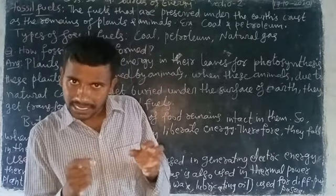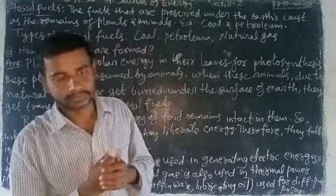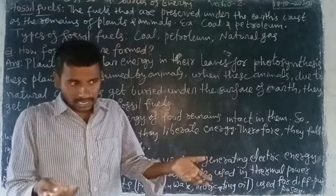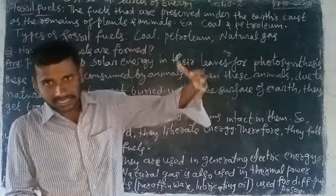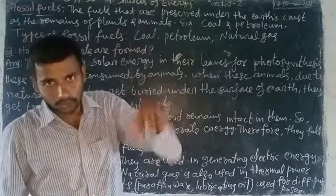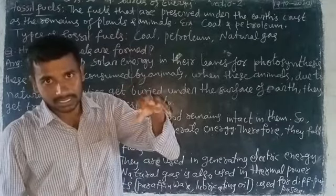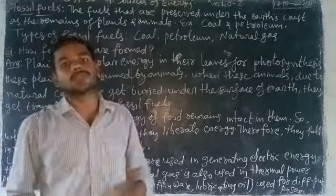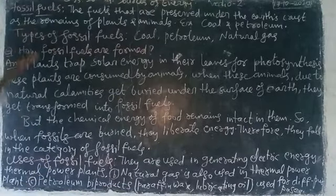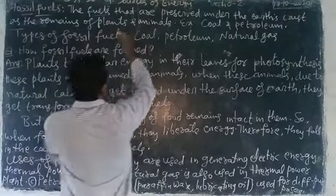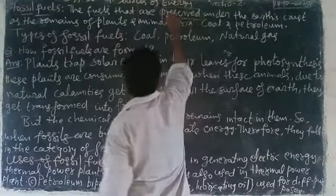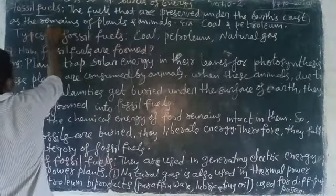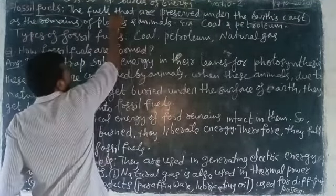How are fossil fuels made up? Fossil fuels are made up of animals and plants bodies after dying. Those dead bodies — the remains of plants and animals — mix into the soil, down into the earth, and convert into fossil fuels. Fossil fuels are the fuels that are preserved under the earth's crust as the remains of plants and animals.